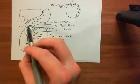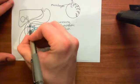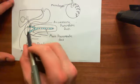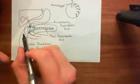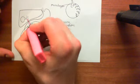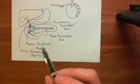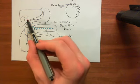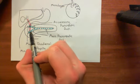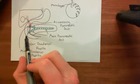The bile duct coming from the liver is going to join onto the main pancreatic duct. It goes behind the duodenum, behind the pancreas, and then joins onto the main pancreatic duct just before it empties out onto the duodenum. In pink, this is the bile duct. Bile is going to come from the liver and from the gallbladder down the bile duct, empty into the main pancreatic duct, and the main pancreatic duct will empty via the major duodenal papilla into the duodenum.